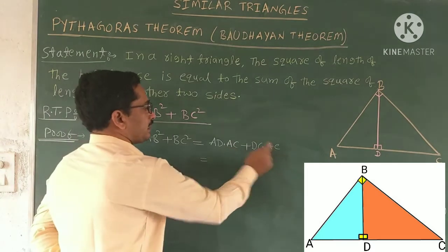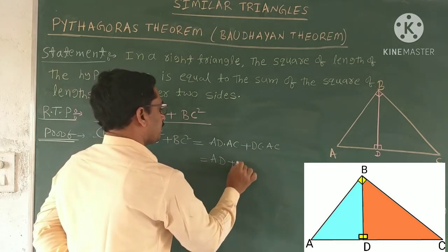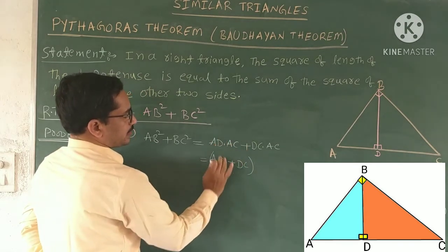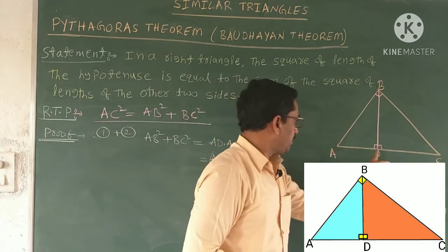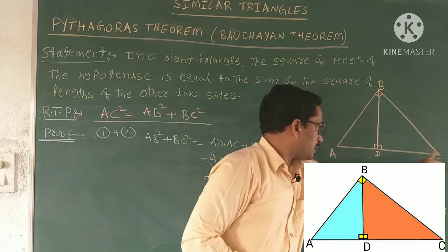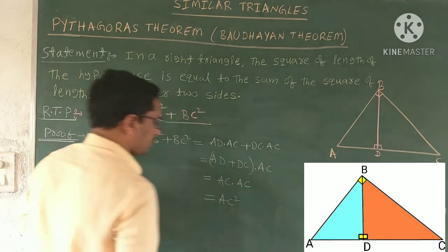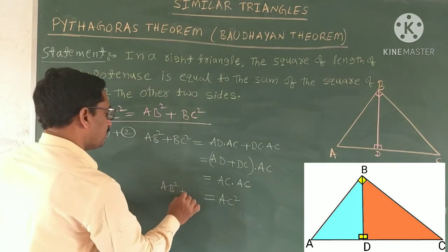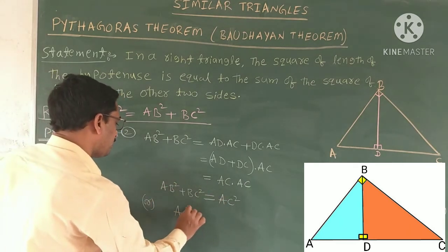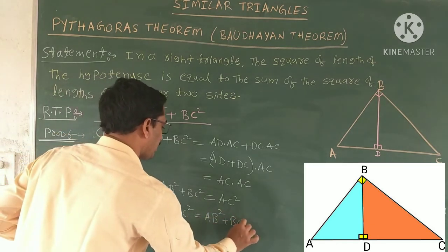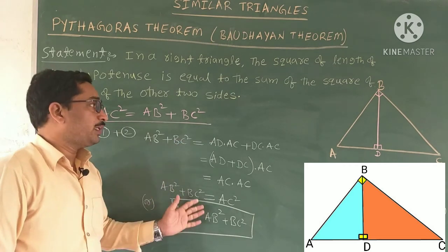On the right side, AC is common. Take AC common: AC × (AD + DC). Now AD + DC is the complete length AC. So we get AC × AC = AC². Therefore AB² + BC² = AC², which is the statement of the Pythagoras theorem. This is the complete proof of the Pythagoras theorem, and it is important in the exam for four marks.